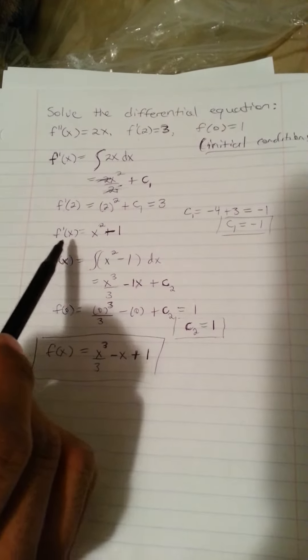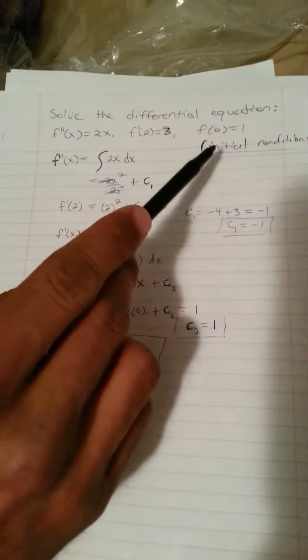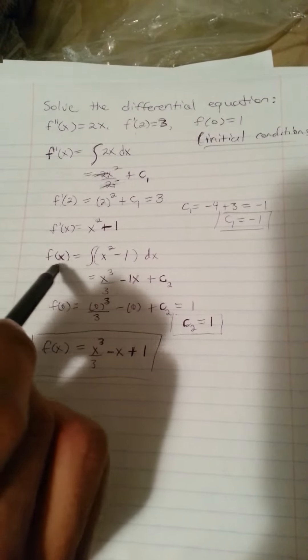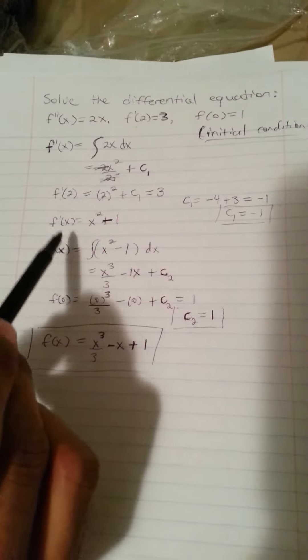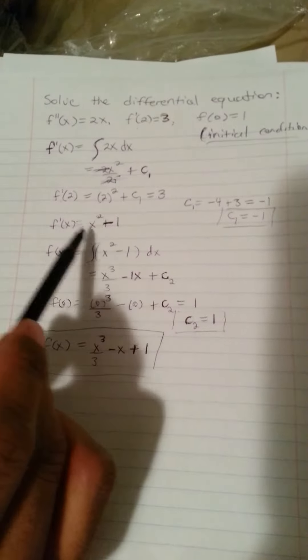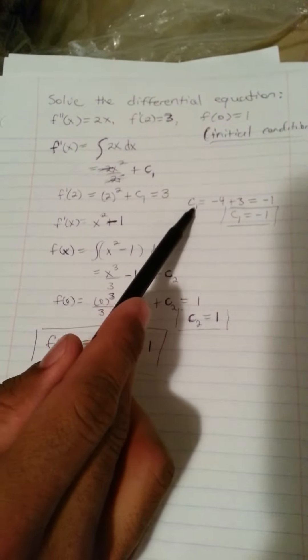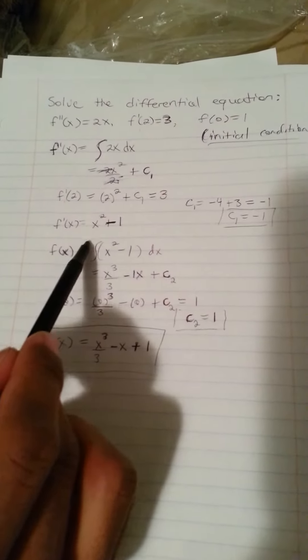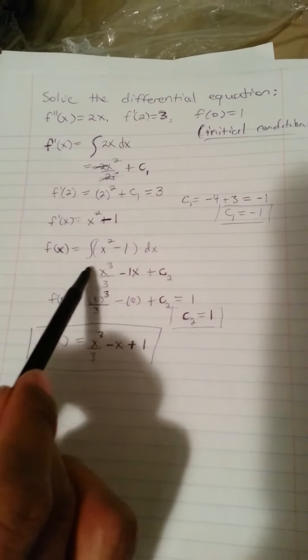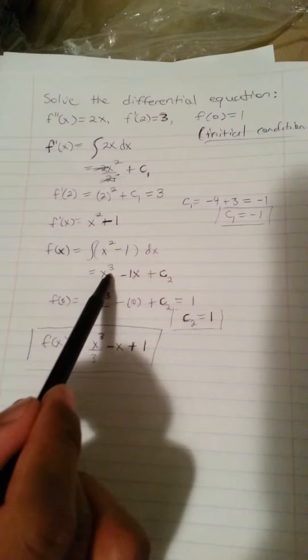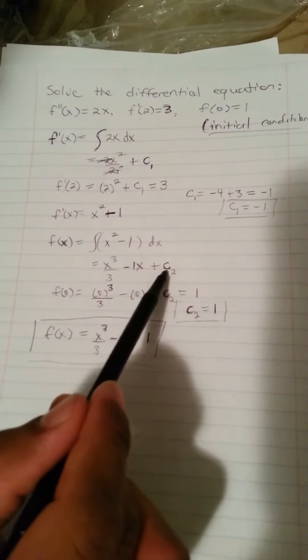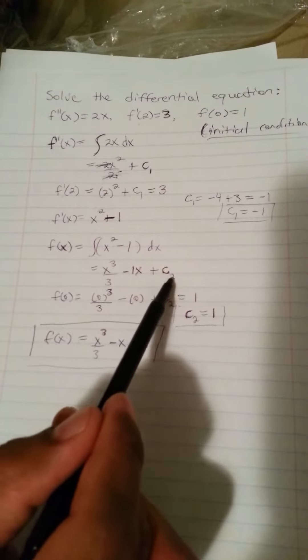So now with the condition of f of 0 equal to 1, we can continue on to find the rest of this equation. So for f prime of x equal to x squared minus 1, and this minus 1, remember, came from where we solved this out. And so we integrate x squared minus 1, and what we end up with is x cubed over 3 minus x plus another constant, which I'll label as c sub 2.